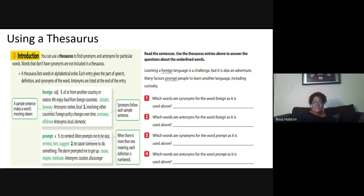Let's look at number two. Which words are antonyms for the word foreign as it is used above? We want the antonyms. And the antonyms would be native and local. They are the opposite of foreign. Very nice.